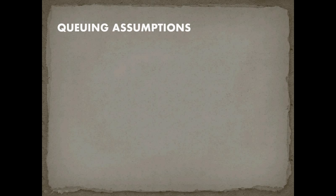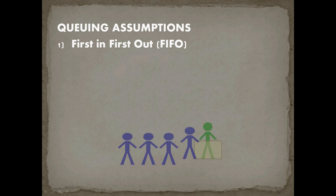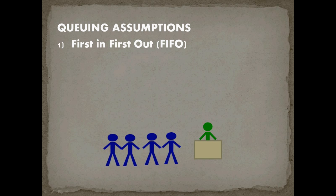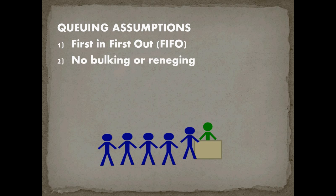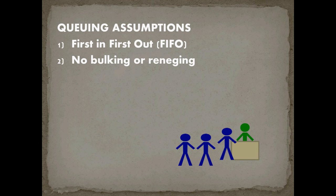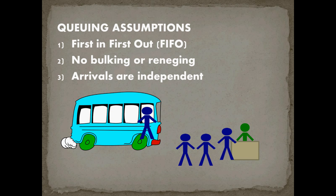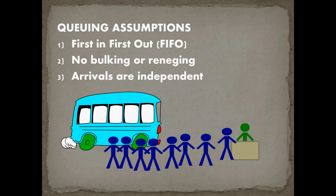The analytic queuing model has several assumptions. First, the model is FIFO — the first customer in is also the first customer out. New arrivals go to the back of the line and the line moves forward in progression. Second, there's no balking or reneging — no matter how long the line gets, customers don't walk away. Third, arrivals are independent — customers aren't arriving in groups, like a busload of people arriving at a restaurant simultaneously.